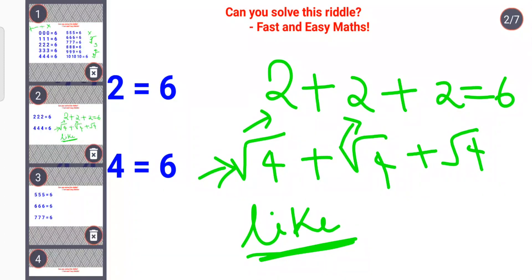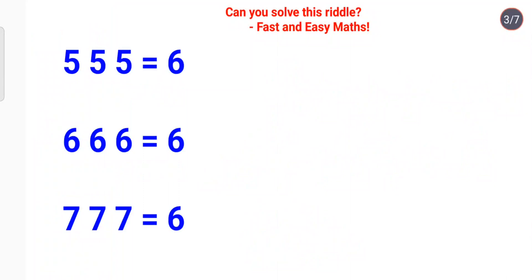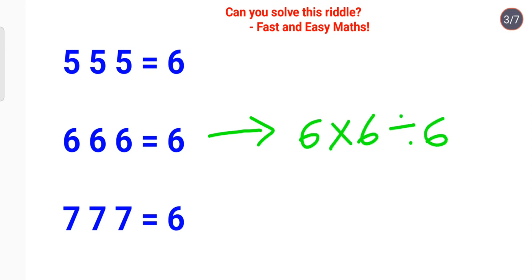Now let's move to a slightly more difficult one. For 6, 6, 6, which we have to make equal to 6: we can do 6 multiplied by 6 divided by 6. So 6 times 6 is 36, divided by 6 gives you 6.